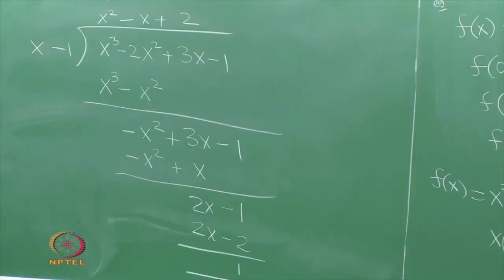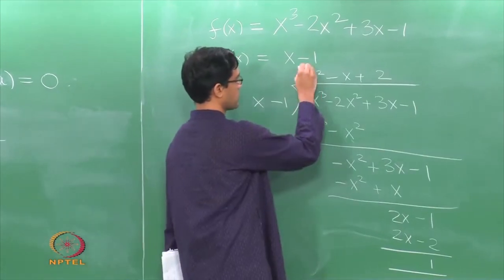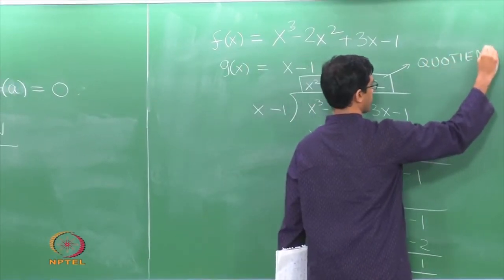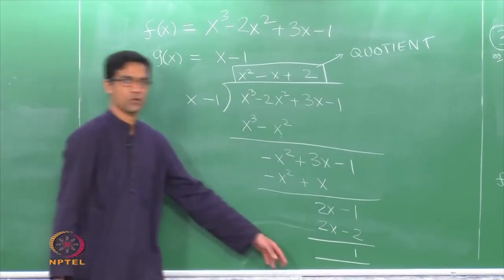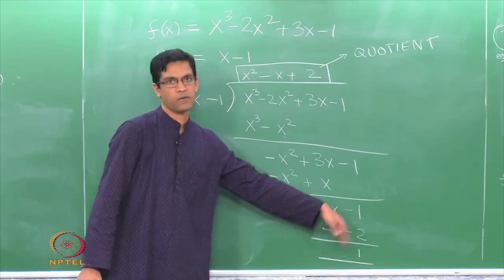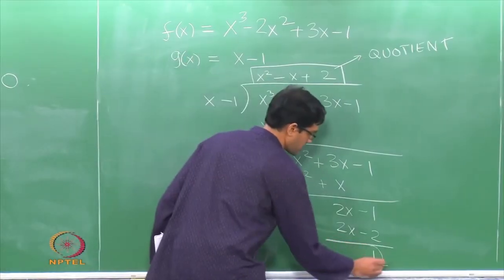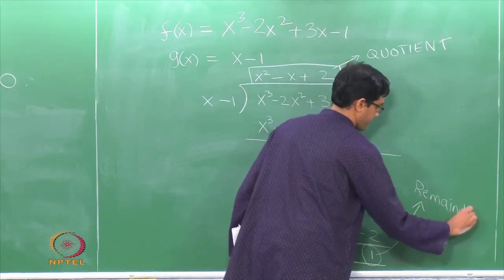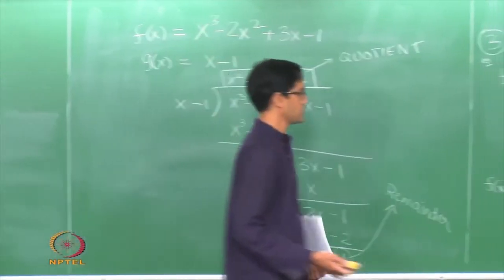We have done this procedure all the way to the end and what it produces is 2 things: one is the quotient, and the last thing here is the remainder. We stopped there because we cannot continue the process — you cannot divide 1 by X minus 1, since the highest power is X to the 0 which is smaller than the highest power of the divisor. So what is obtained at the very end is what you call the remainder. Long division produces a quotient and a remainder — that is the key thing to remember.